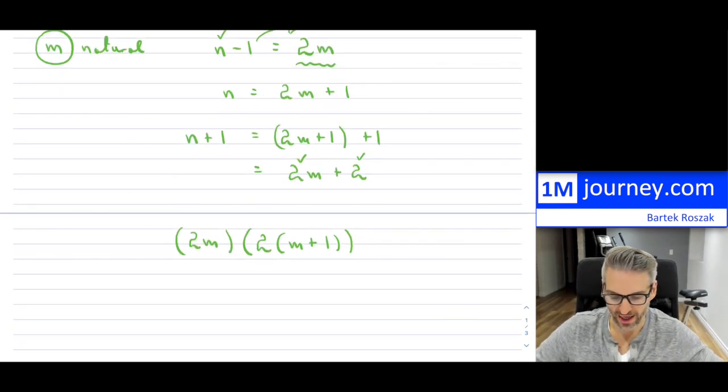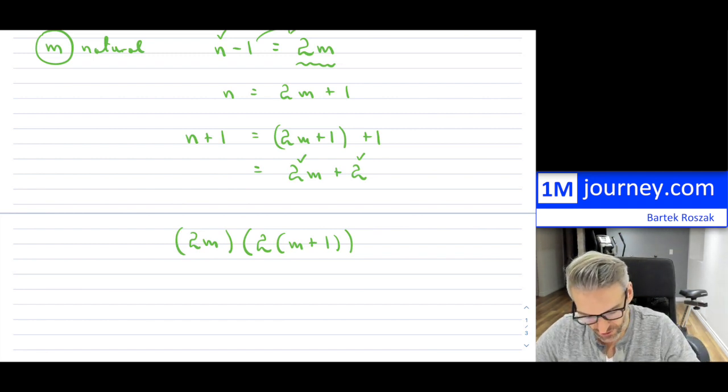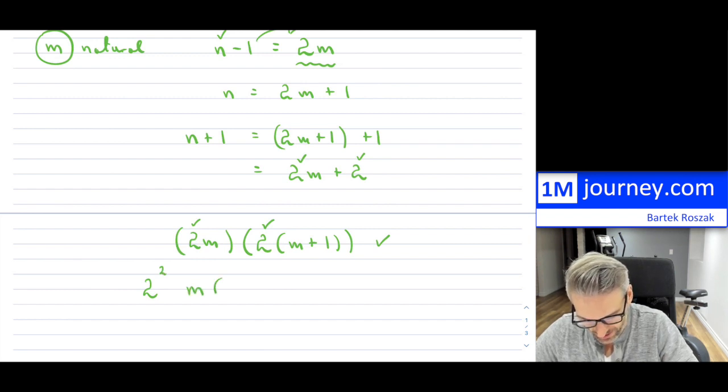Now, you might say, why are you doing that? But, well, I'm ultimately trying to show that the n minus 1 times n plus 1 is divisible by 8. So that's what I'm ultimately after. Now, if you notice this statement, the way that it's written, I can take the 2 out of here, and I can take the 2 out of here. So that's going to be 2 squared. And then that's going to leave me with m, and then it's going to leave me with m plus 1.